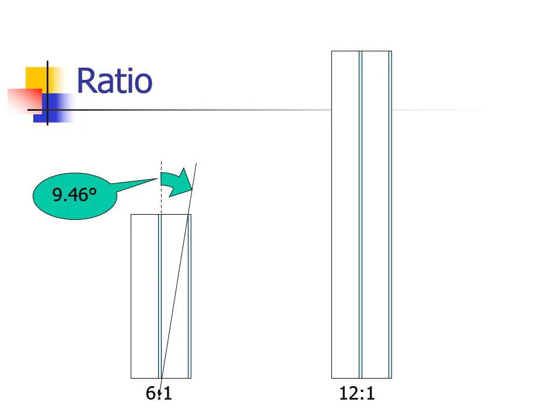Any ray traveling at an angle more than 9.46 degrees from vertical will be stopped by the lead strips of the grid. Or, if the grid is misaligned by more than 9.46 degrees from perpendicular to the central ray, it will stop or cut off the primary radiation necessitating a repeat view.